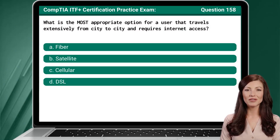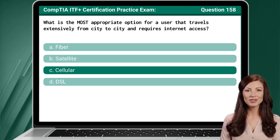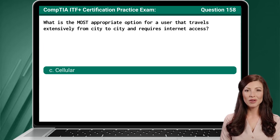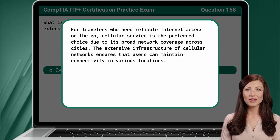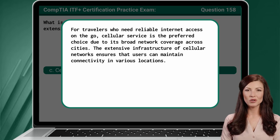Question 158. What is the most appropriate option for a user that travels extensively from city to city and requires internet access? The answer is C: cellular. For travelers who need reliable internet access on the go, cellular service is the preferred choice due to its broad network coverage across cities. The extensive infrastructure of cellular networks ensures that users can maintain connectivity in various locations.